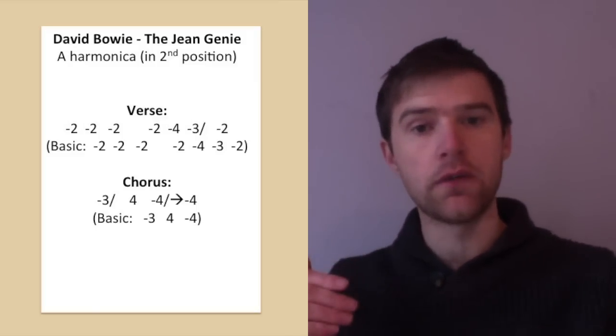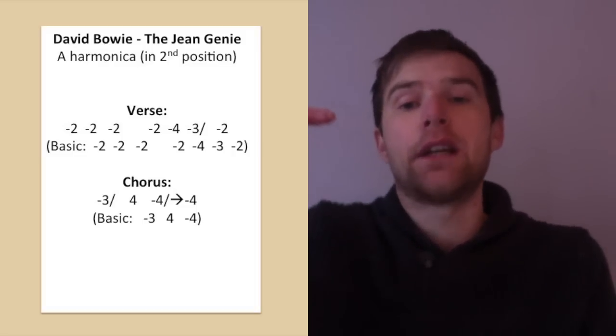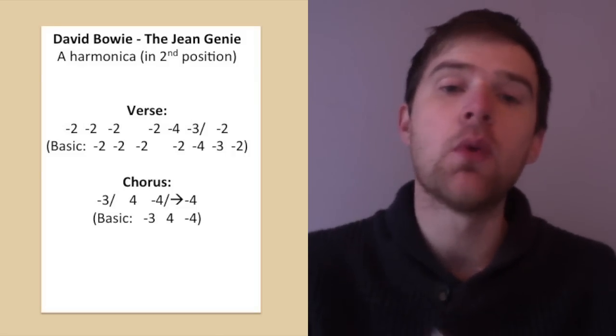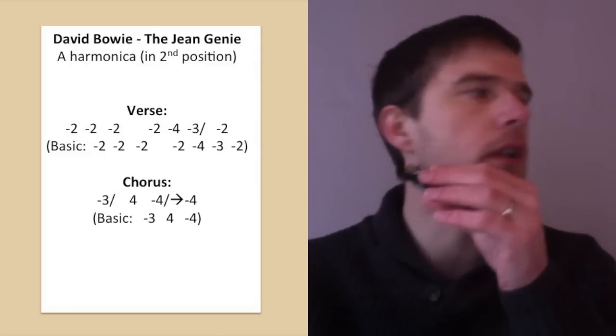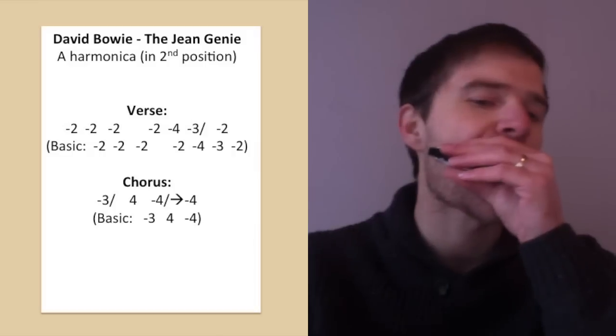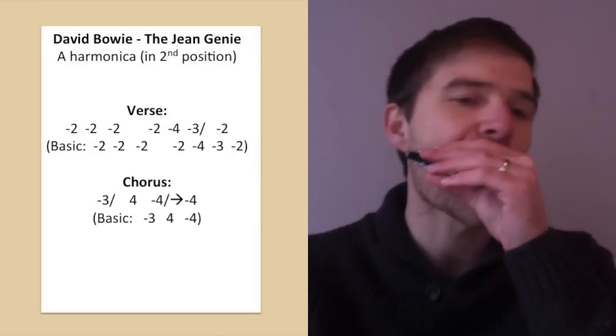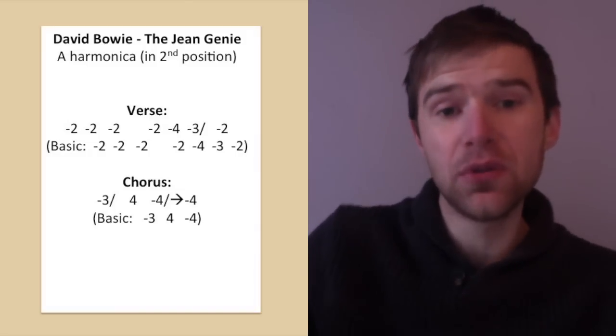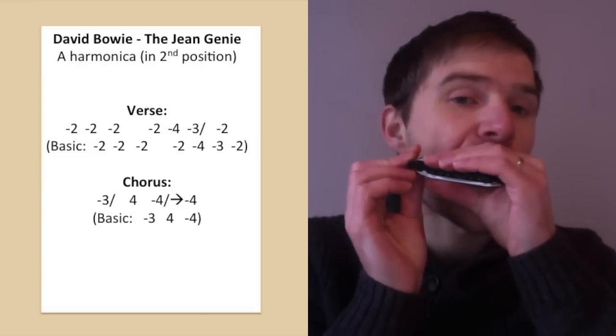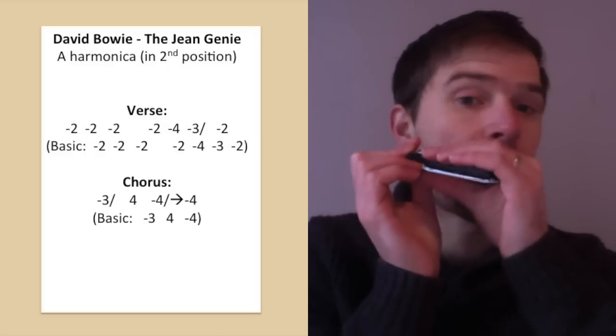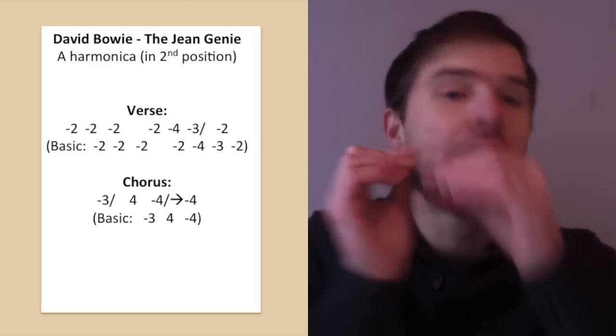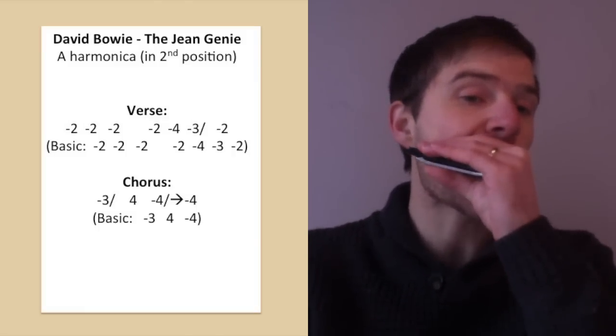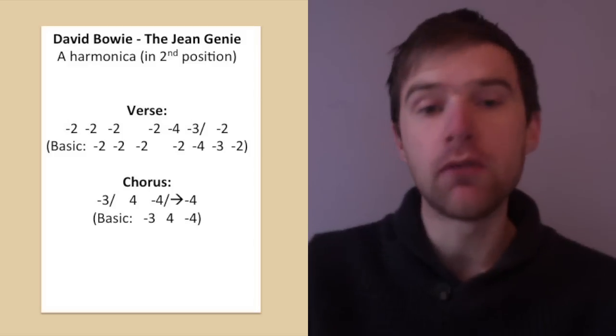Now when it gets to the four draw, I actually start the four draw with a little bit of a bend, and I release that so you can hear the note kind of scooting up a little bit. Again if you can't get that bend just hold that four draw. That's the three draw semitone bend. That's the four blow. That's the four draw starting with a bend and releasing it.